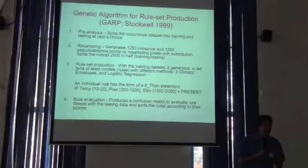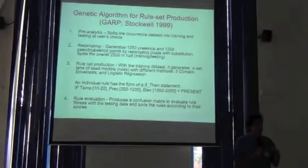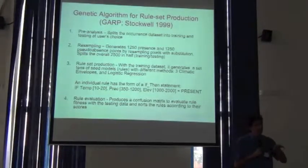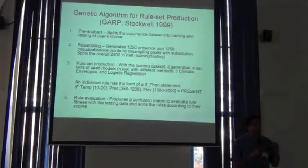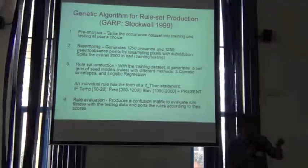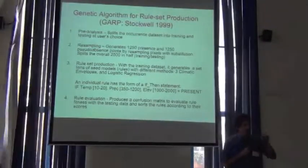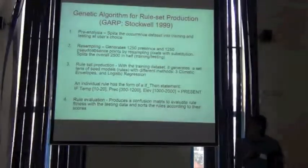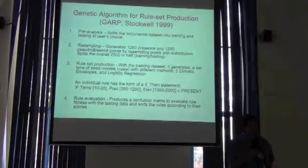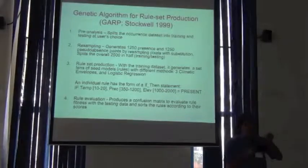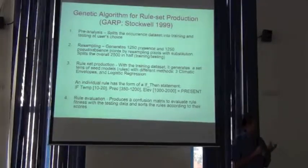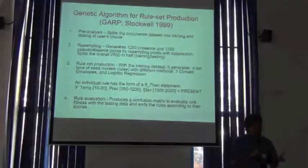From your training data, the system resamples the data — say you kept 50 of the 100 points — and resamples these 50 presence points into 250 presence data points. It then takes from the rest of the study area another 1,250 pixels, known as pseudo-absences, assuming that the species is absent in those areas. So you end up with a full set of 2,500 points of presences and absences.